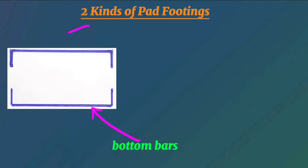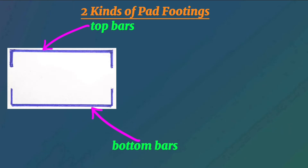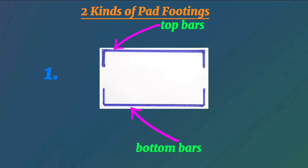Let's look at pad footings or bases. Basically there are two kinds of pad footings: one with bottom bars and top bars, and the other with only bottom bars. The second one is the most common one. I'm going to show you exactly how to prepare its bar bending schedule. But first, let's begin with the one with bottom bars and top bars — this can be understood clearly with an example.